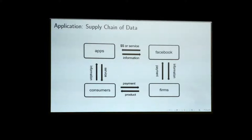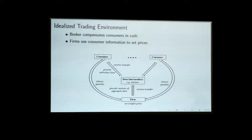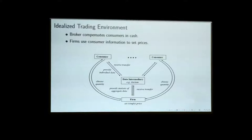Today the basic model I want to present gives some initial results where we think about a single data intermediary that holds all the information — classically speaking, think about Acxiom or Experian that collects information from consumers, is willing to pay them for that information, and then turns around and sells this information to firms who in turn use it to price discriminate, offering different prices to different segments where the segmentation happens endogenously based on the information the firms received from the data intermediary. That is the setting I want to study to get first insights into the organization of markets and the price of information.